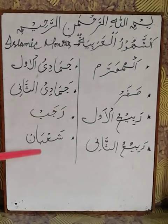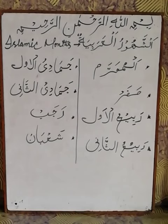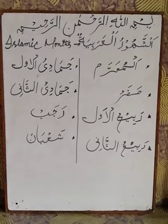And Sha'ban. Aaj humne padhe aath — insha'Allah aage hum aur chaar padhenge; total honge twelve, yoh aapke Islamic months. Acche se learn karenge. Wassalamu alaikum wa rahmatullahi wa barakatuh.